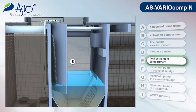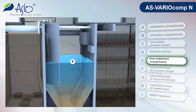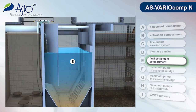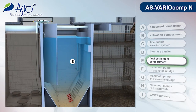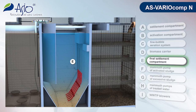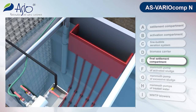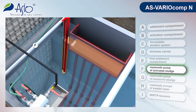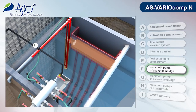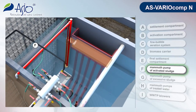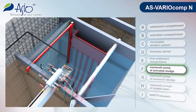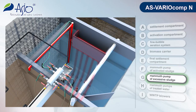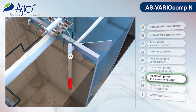Activated mixture from the activation part flows into a vertical final settlement tank where activated sludge and treated water are separated. Separated activated sludge is redrawn to the activation process by a mammoth pump, and excessive aerobically stabilised sludge is directed to the sludge compartment.